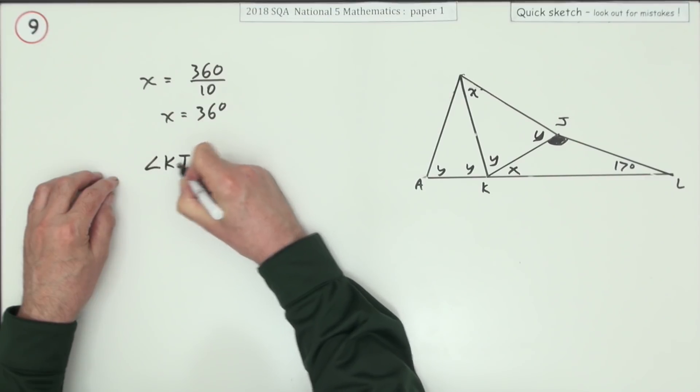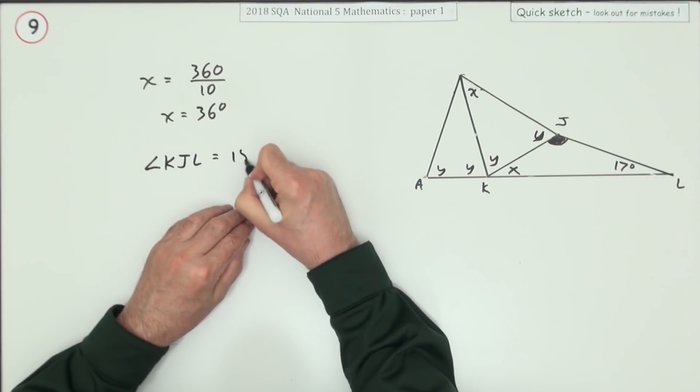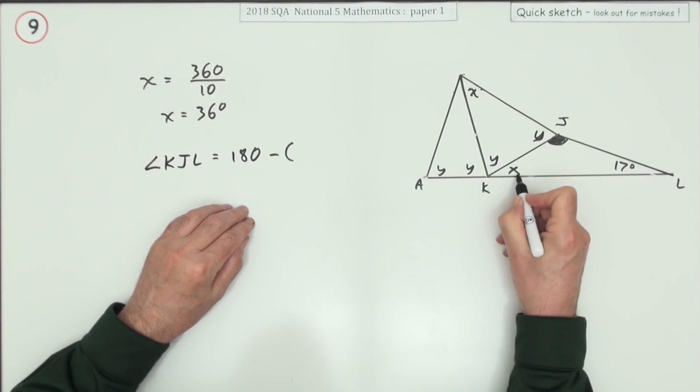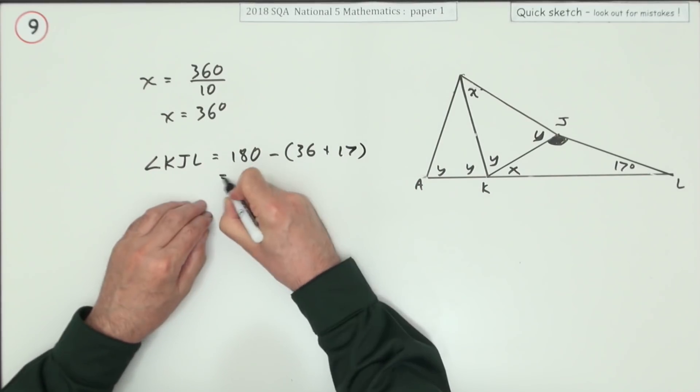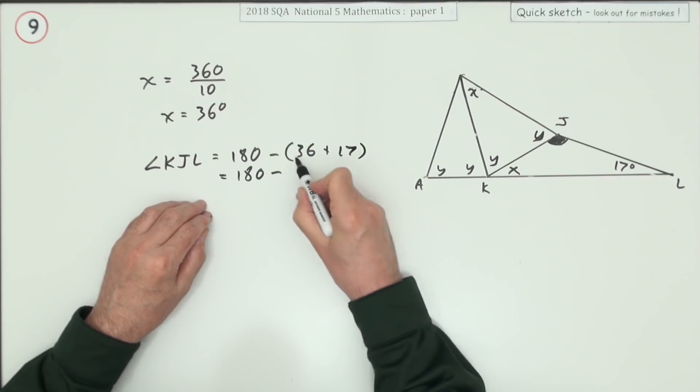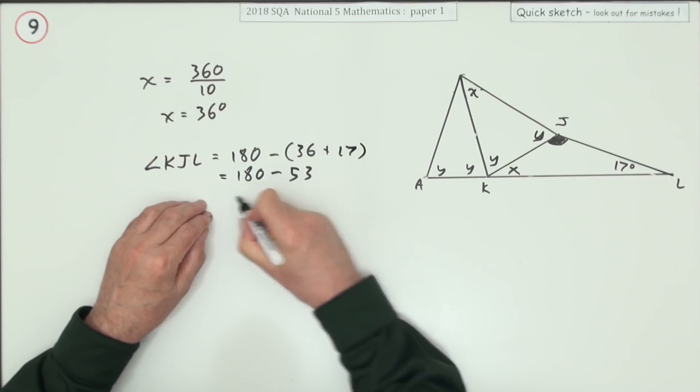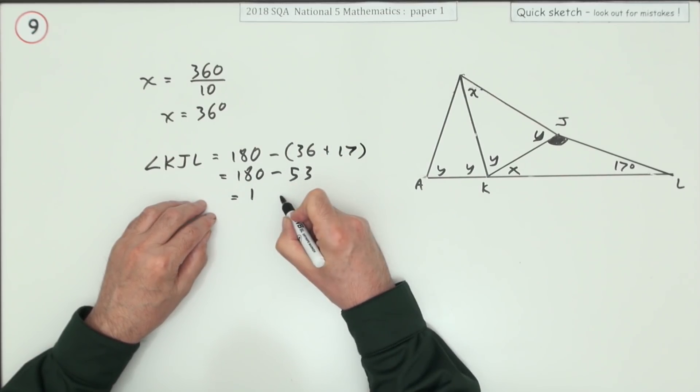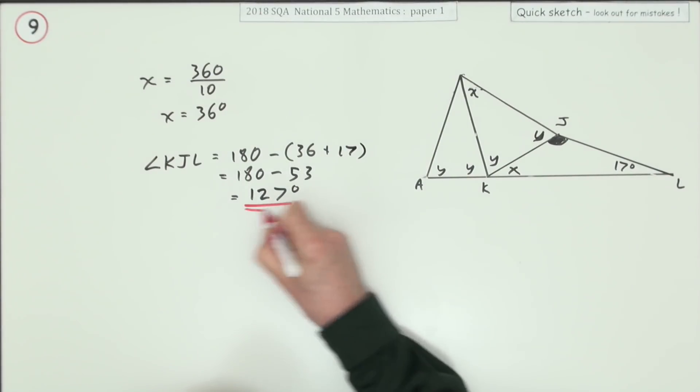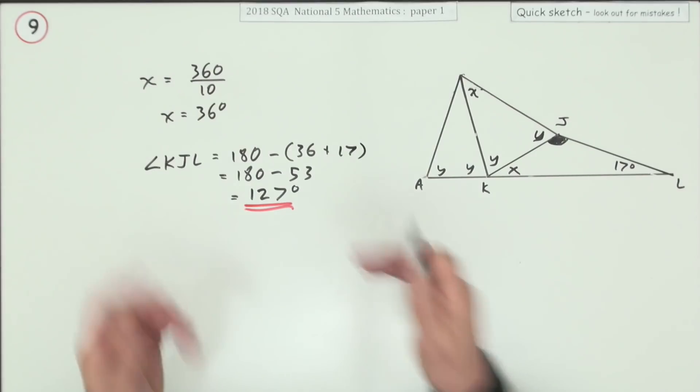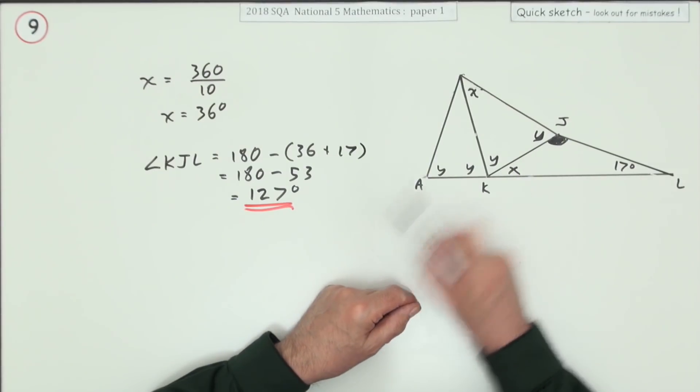So that I could get the angle I want, angle KJIL will be 180 minus—if that's the same as x, that's 36 plus 17—that's 180 minus 53, which is 127.